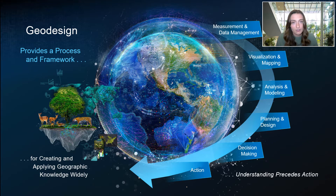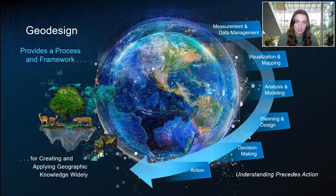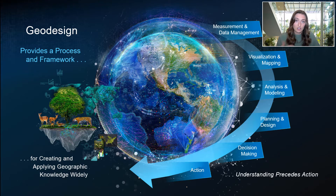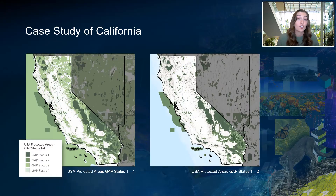In a geodesign framework, planners and decision makers can analyze and understand given conditions before testing alternative responses to their planning questions. And once these decisions have been vetted, we can move into action. Geodesign can be used to address the calls to action of the Half-Earth project, global 30 by 30 initiatives, and California's 30 by 30 initiative.